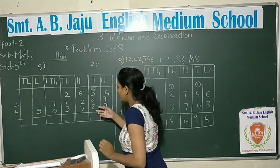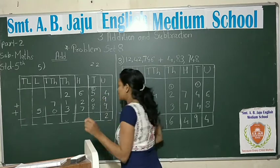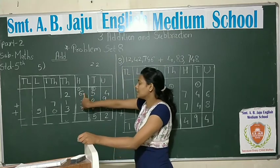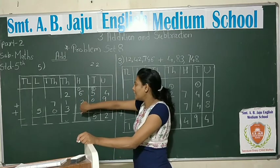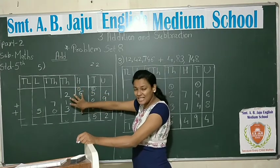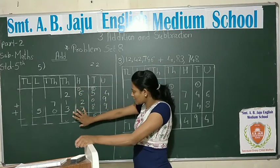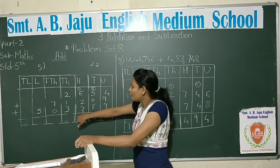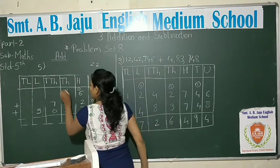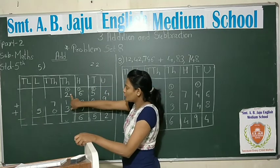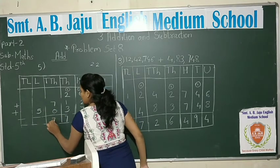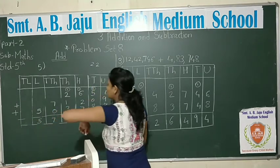So students, continuing: 8 plus 2 is 10, 10 plus 5 is 15, write 5, carry 1. 6 plus 2 is 8, 8 plus 1 is 9. Then: 2 plus 1 is 3. 7 plus 3 is 10, 10 plus 6 is 16, write 6, carry 1. 2 plus 1 is 3, 3 plus 3 is 6, 6 plus 1 is 7. 7 plus 0 is 7. And 5.